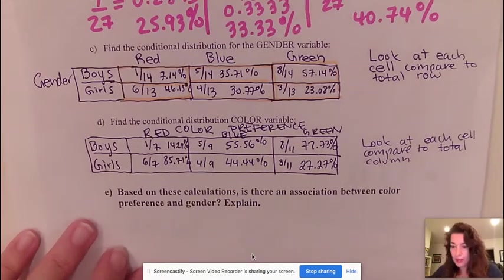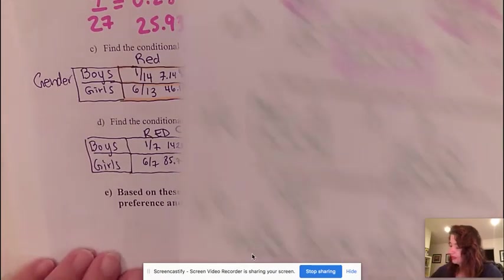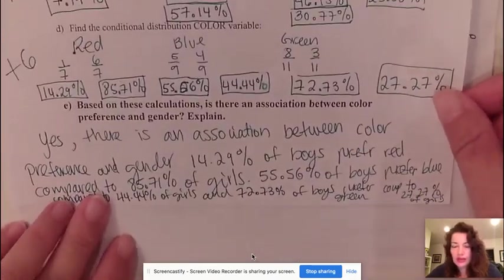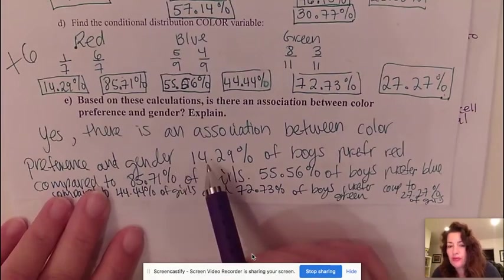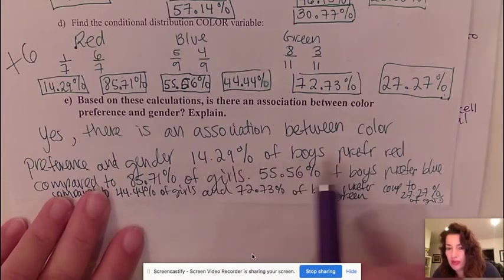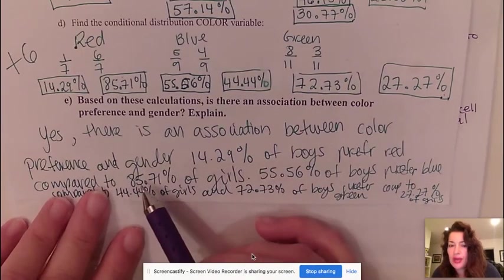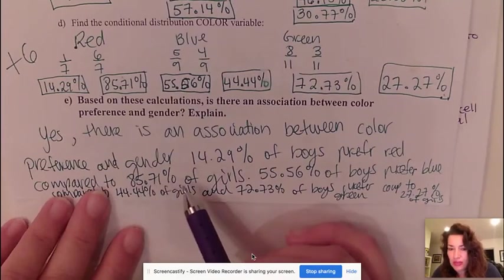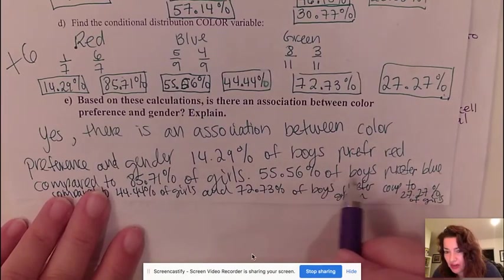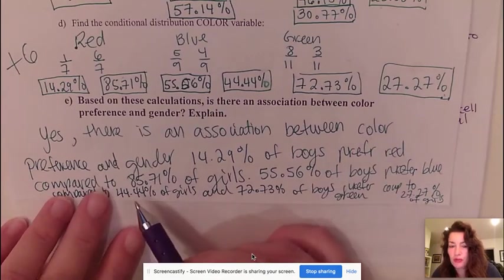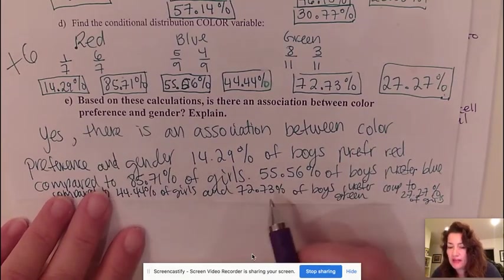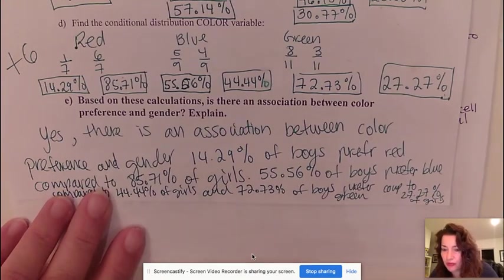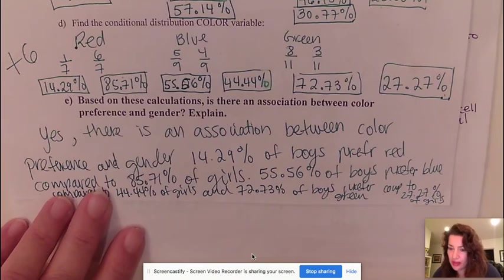So an example you could say is something like this: Yes, there is an association between color preference and gender. 14.29% of boys prefer red compared to 85.71% of girls. 55.56% of boys prefer blue compared to 44.4% of girls. And 72.73% of boys prefer green compared to 27.27% of girls.